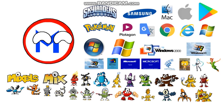Skylanders means you get 900 on decilion years off. Samsung means you get 800 on decilion years off. Mac means you get 700 on decilion years off. Apple means you get 600 on decilion years off. Google Play means you get 500 on decilion years off.